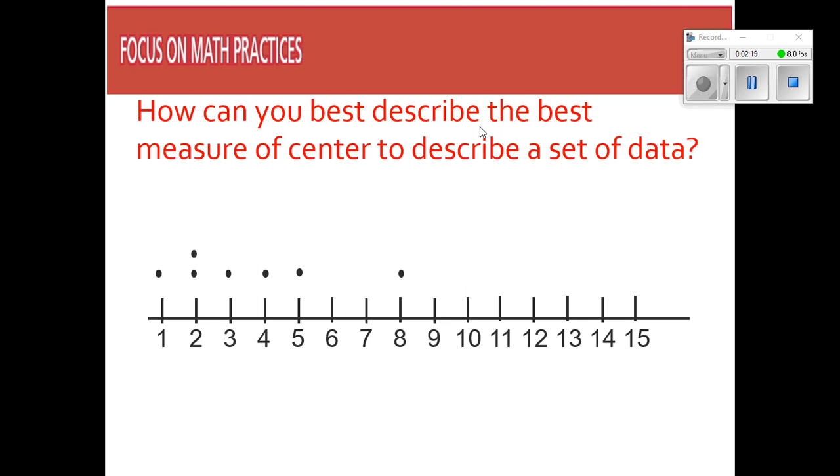So I would say that's going to be the mode. And it says in support of Levi's argument, eight point five minutes is the mode, so it occurs most often. This means the geyser is most likely to erupt again after eight point five minutes. How can you best describe the best measure of center to describe a set of data? Well, first of all, let's look at the means in this particular set of data here.